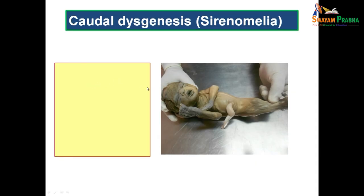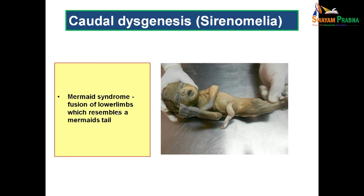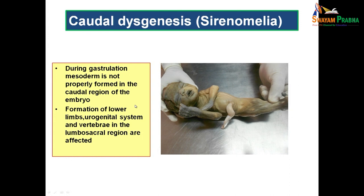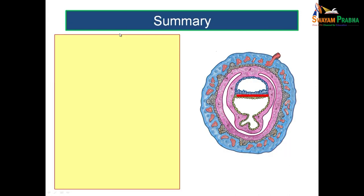Now for the applied aspects. Caudal dysgenesis or sirenomelia — otherwise known as mermaid syndrome — is caused because the mesoderm is not properly formed in the caudal region of the embryo. As a result, in the caudal region, you would not get proper formation of lower limbs, the urogenital system, and vertebrae in the lumbosacral region. All these structures are affected if gastrulation is not occurring properly in the caudal region, resulting in caudal dysgenesis or sirenomelia.